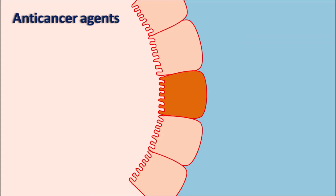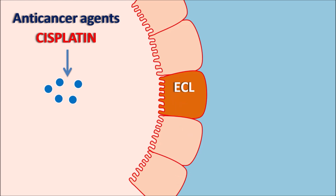When anti-cancer agents are administered, they enter the GI tract, and some can induce high nausea and vomiting. For example, when cisplatin molecules reach the small intestine, they act on enterochromaffin cells (ECL cells). These ECL cells are equipped with chemoreceptors that recognize chemical signals. Cisplatin binds to these chemoreceptors, stimulating the ECL cells, which then release 5-HT (serotonin).